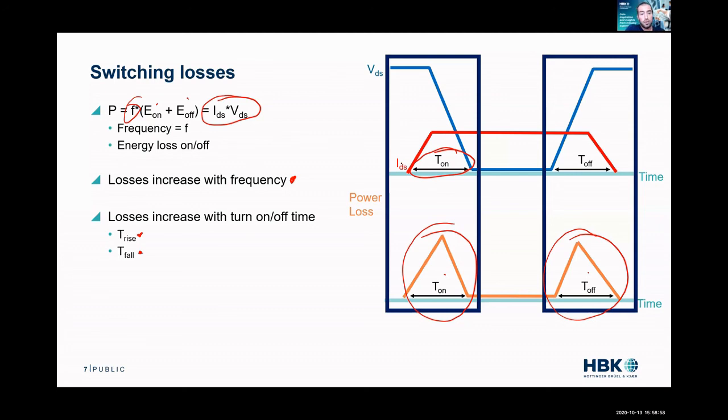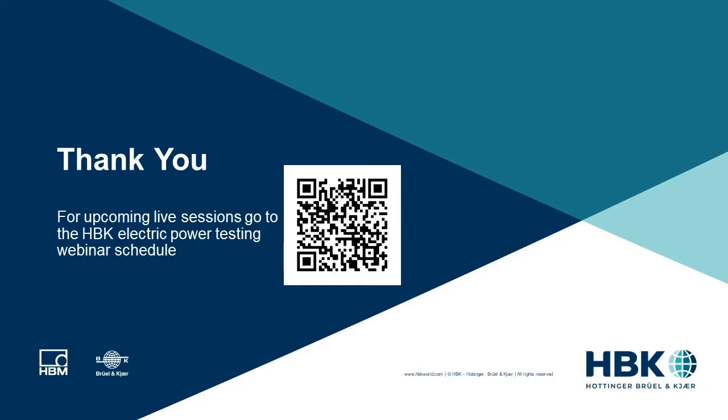Really understanding how we operate the switch, understanding the energy loss per switch, or directly measuring - our ways we can characterize switching losses. So okay, we've gone over conduction losses - those are I squared R. We've gone over switching losses - that's a little bit of energy loss per switch.